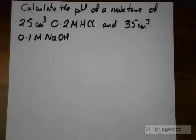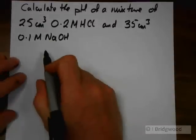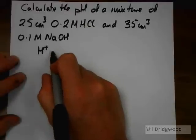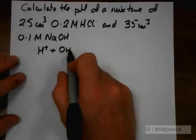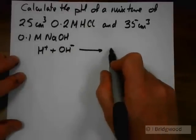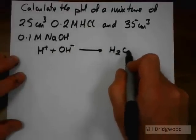So here we have a mixture of a strong acid and a strong base. Now the key to this is that the hydrogen ions are going to react with the hydroxide ions in a 1 to 1 ratio to form water.